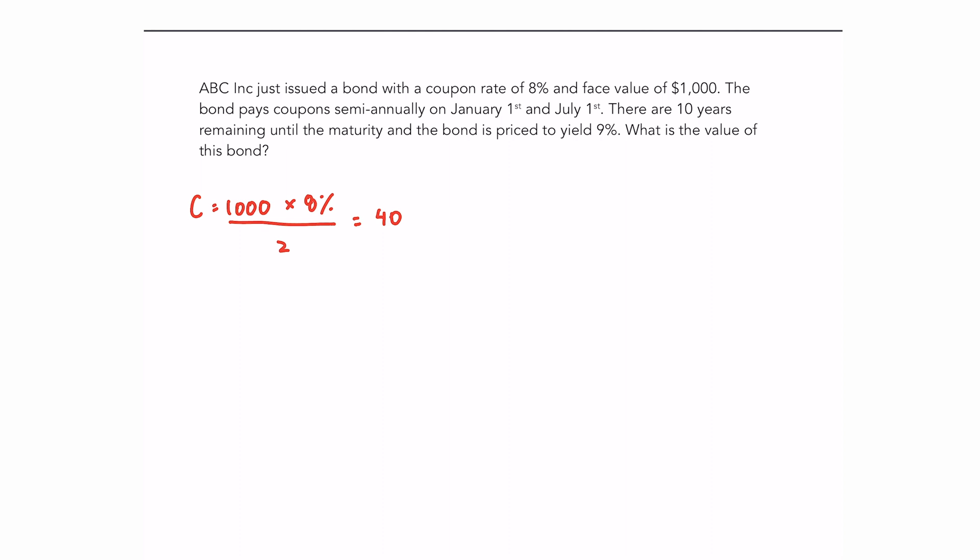Next, I'm going to take the yield to maturity and divide it by 2, once again, because the coupons are paid semi-annually. So my rate in this question will be 0.09 divided by 2, which is 0.045, or 4.5%. So I typically like to call my rate K. You can call it R, you can call it whatever you want.